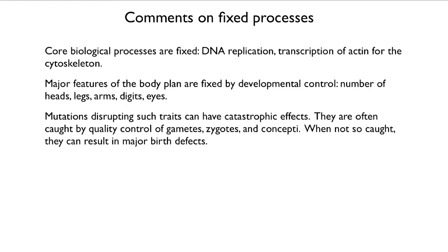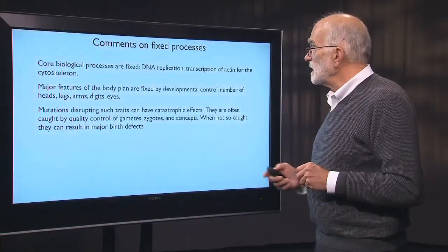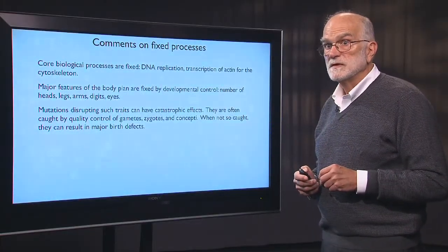If there's a mutation that disrupts such a trait, there can be a really catastrophic effect. Normally, the quality control mechanisms in the mammalian reproductive tract will catch mutations of large effect, either at the gametic, zygotic, or conceptus stage. There might be an early spontaneous abortion in the first menses that the woman never even notices. But when they're not caught, there can be major birth defects.